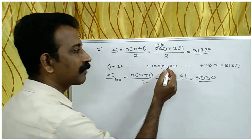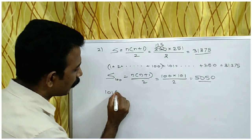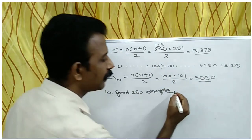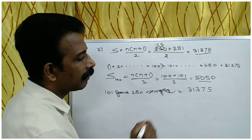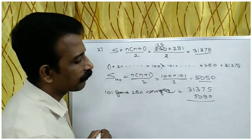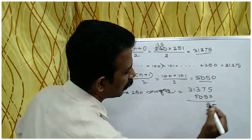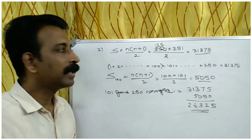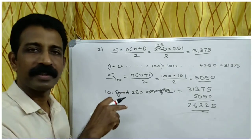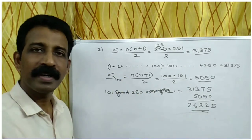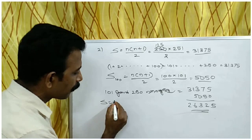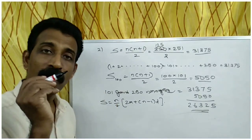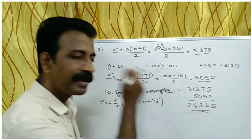Again, we have to find the sum of numbers from 101 to 250. That is 31375 minus 5050. This is the required sum of numbers from 101 to 250, which gives us the result.